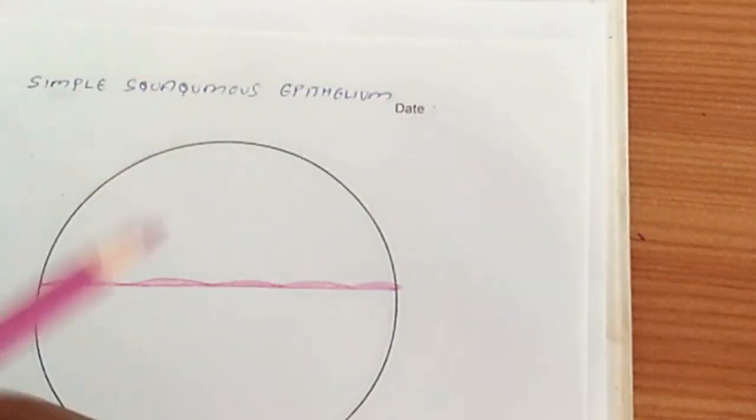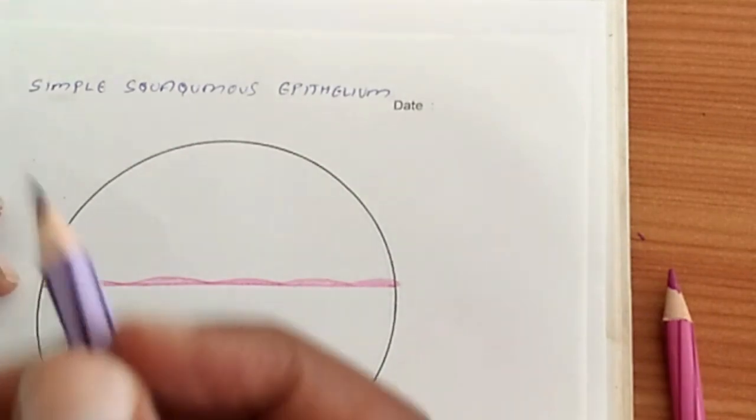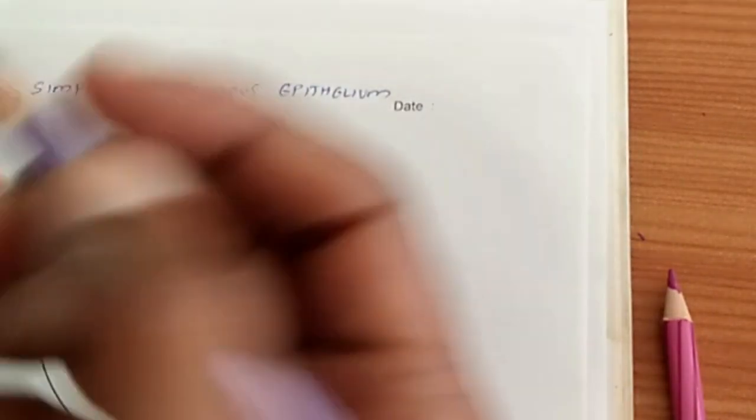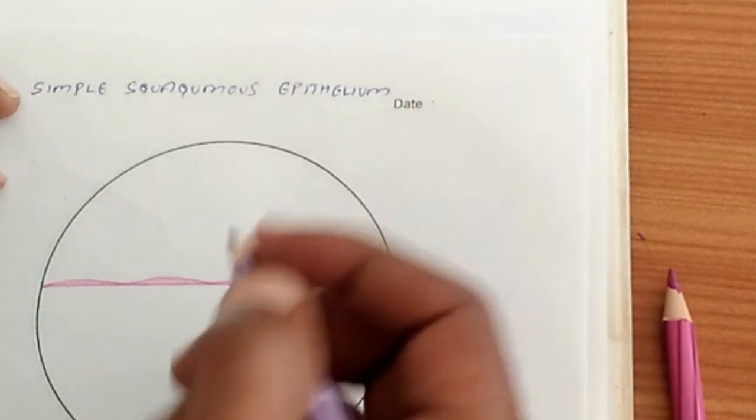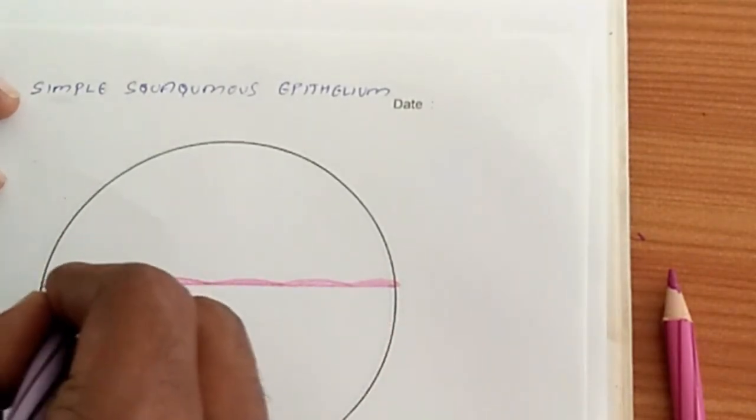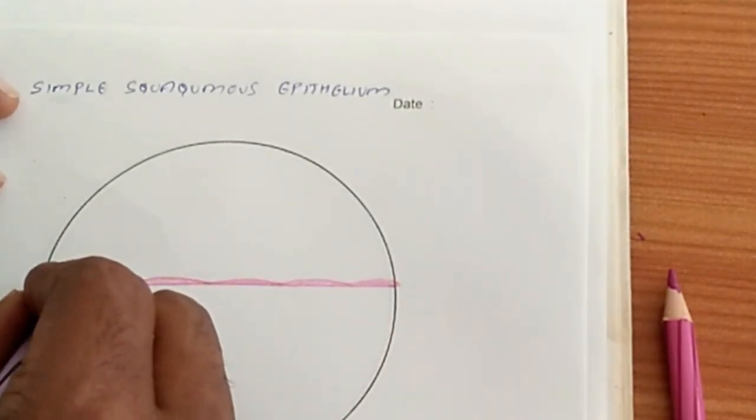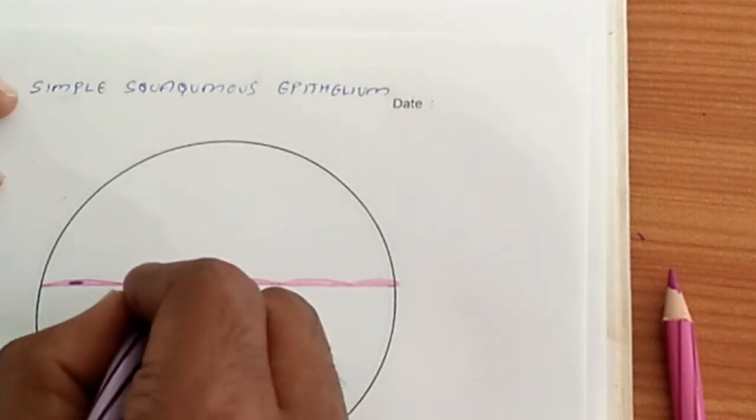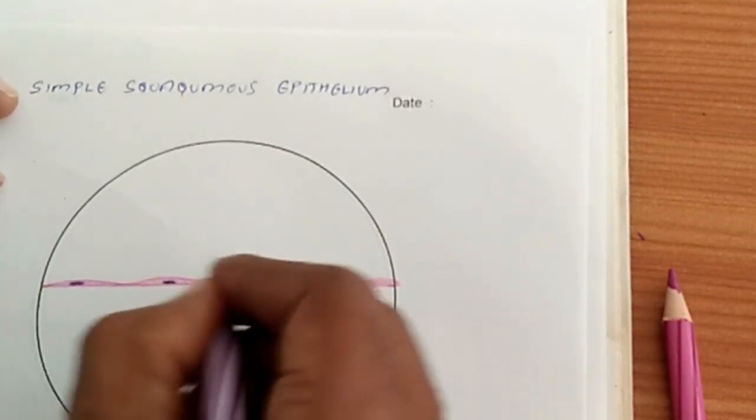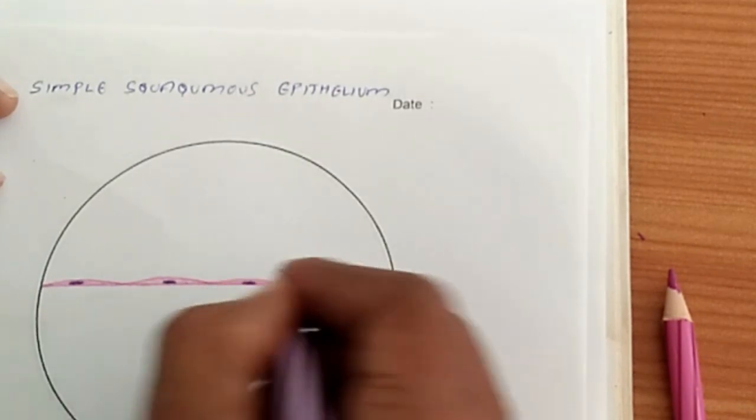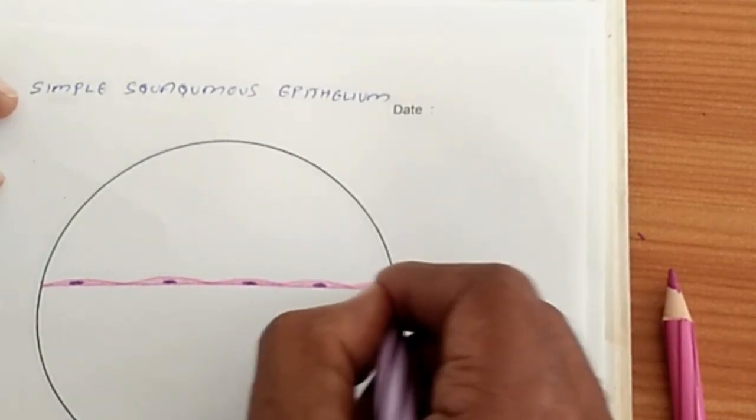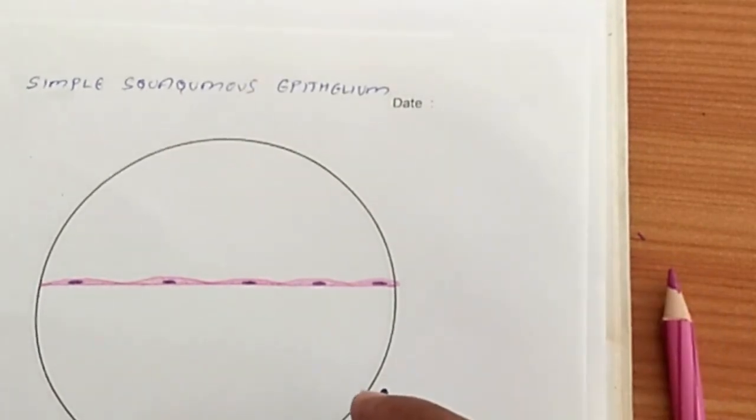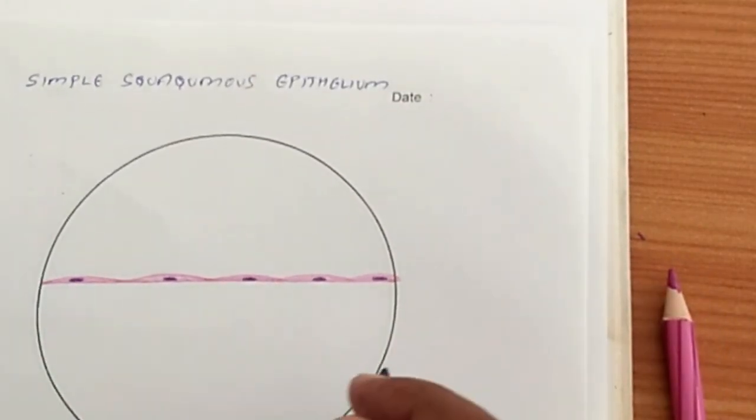Now the cytoplasm is drawn, shaded. Now this is hematoxylin pencil, which is used for marking the nucleus. So simple squamous epithelium, the nucleus is oval at the base. The oval nucleus can be drawn like this. So this is simple squamous epithelium.